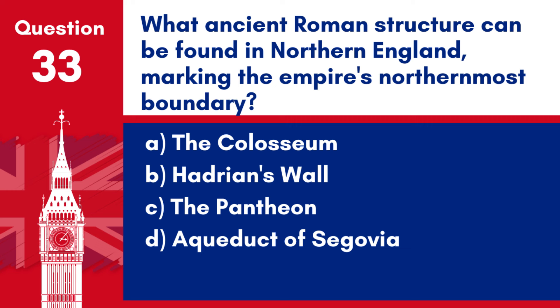Question 33. What ancient Roman structure can be found in northern England, marking the empire's northernmost boundary? a. The Colosseum. b. Hadrian's Wall. c. The Pantheon. d. The Aqueduct of Segovia.